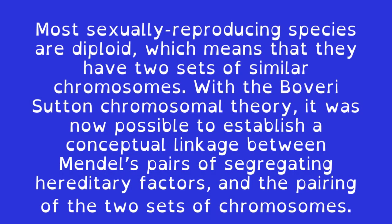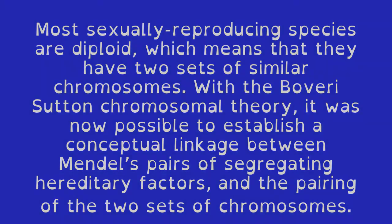Most sexually reproducing species are diploid, which means that they have two sets of similar chromosomes. With the Boveri-Sutton Chromosomal Theory, it was now possible to establish a conceptual linkage between Mendel's pairs of segregating hereditary factors and the pairing of the two sets of chromosomes.